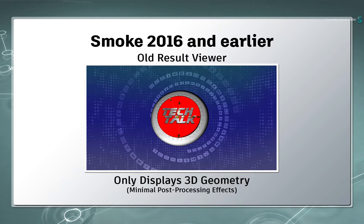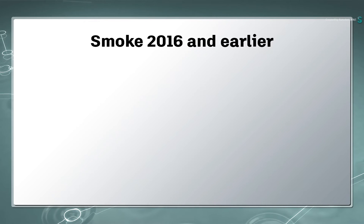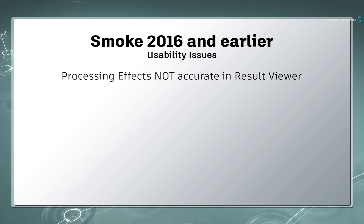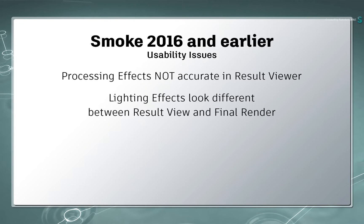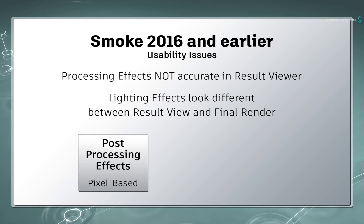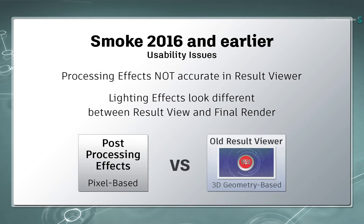So the Result Viewer was actually a 3D geometry viewer with some built-in processing effects. The issue was that a lot of processing effects were not exactly accurate when working in the composite — certain lighting effects would look one way in the composite and then totally different when rendered. The reason for this is that the post-processing effects are pixel-based, unlike the old Result Viewer which is geometry-based.